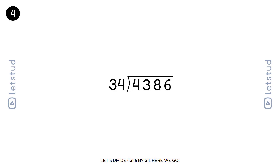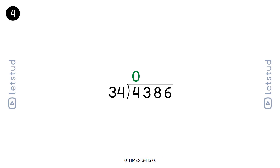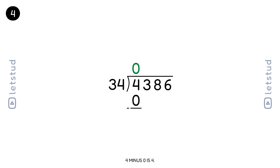Let's divide 4386 by 34. Here we go. We start with the first digit, 4. 34 fits into 4 zero times. 0 times 34 is 0. 4 minus 0 is 4. You're doing great.